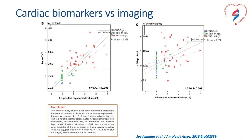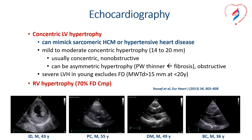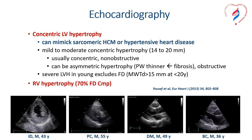Echocardiography, the most used tool in our experience, will show concentric LV hypertrophy, which can mimic sarcomeric hypertrophic cardiomyopathy or even hypertensive heart disease. It is usually mild to moderate concentric hypertrophy, less than 20 millimeters, usually non-obstructive. However, from our experience as well as from other centers, there can be patients with obstructive hypertrophic cardiomyopathy which proved to be Fabry disease.